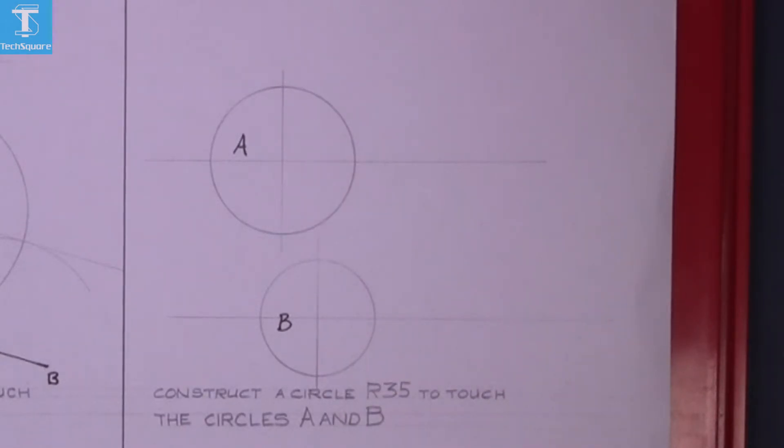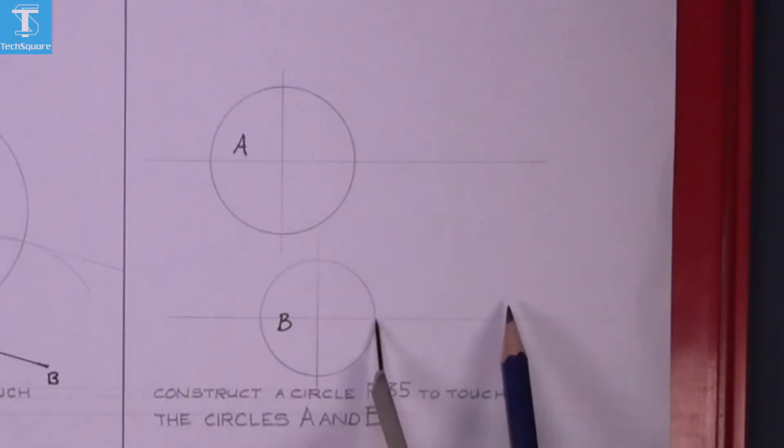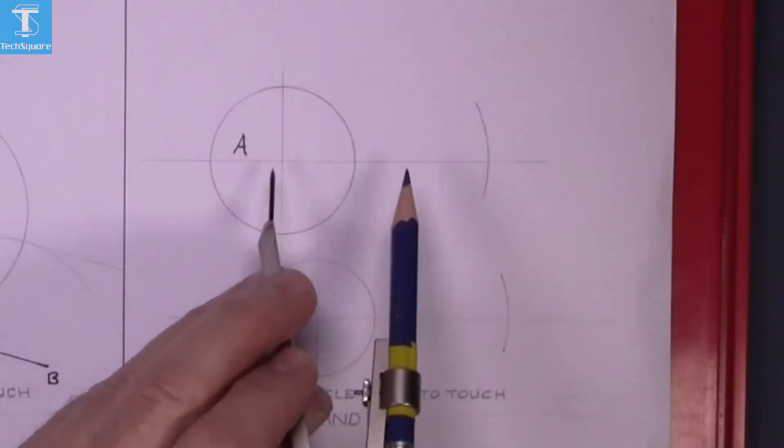So set the compass to 35 and as before, add the distance on to circle B, add that distance on, that's the new radius. Same again here, add it on.